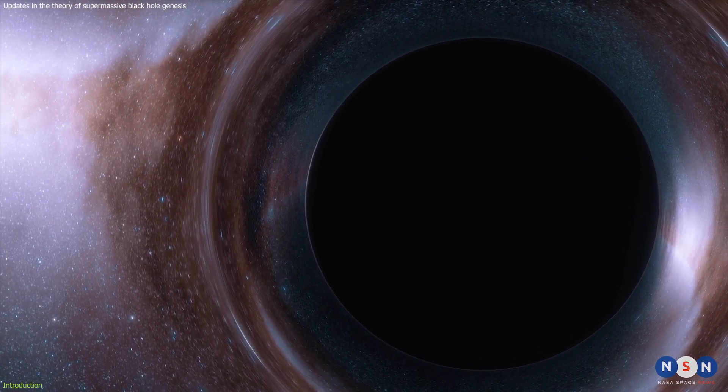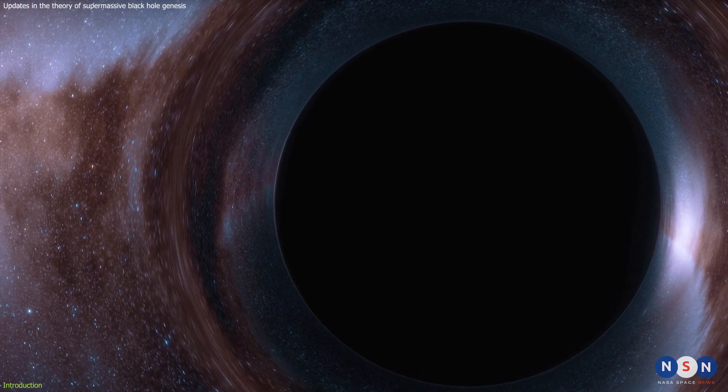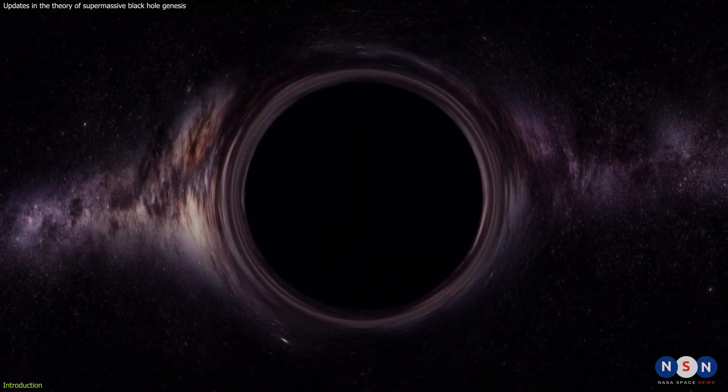But how did they get so big in the first place and how did they form so quickly in the early universe when everything was still young and chaotic? Well, a new study has just proposed a radical answer to these questions and it could change everything we know about supermassive black holes.